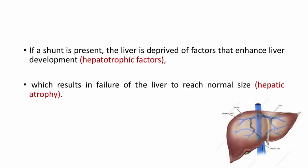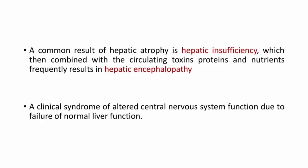If a shunt is present, the liver is deprived of factors that enhance liver development. These factors are called hepatotrophic factors, and the deprivation or loss of these factors results in the failure of the liver to reach normal size, leading to hepatic atrophy. A common result of hepatic atrophy is hepatic insufficiency, which combined with circulating toxins, proteins and nutrients frequently results in hepatic encephalopathy — a clinical syndrome of altered central nervous system function due to the failure of normal liver function.